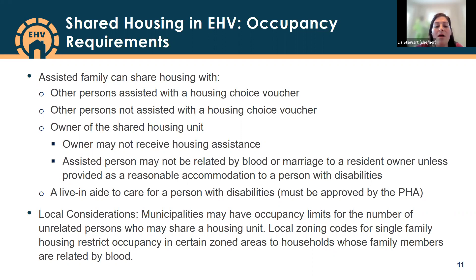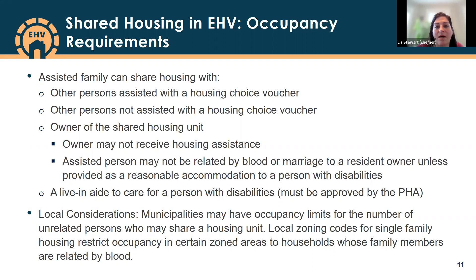Keep in mind that some municipalities may have occupancy limits for the number of unrelated persons who may share a housing unit — for example, no more than four unrelated persons in one unit. Local zoning codes are also sometimes an issue for single-family housing, where some zones restrict occupancy to households related by blood. It's important to look up and understand these limits to better serve assisted families in shared housing.